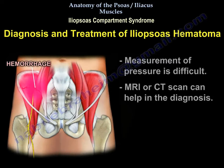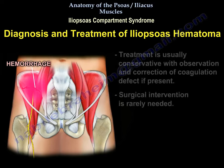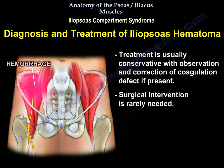Diagnosis and treatment of iliopsoas hematoma: measurement of pressure is difficult; MRI or CT scan can help in the diagnosis. Treatment is usually conservative with observation and correction of the coagulation defect if present. Surgical intervention is rarely needed.